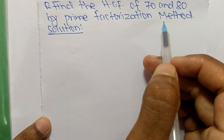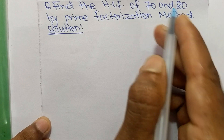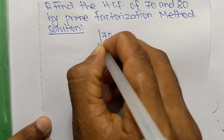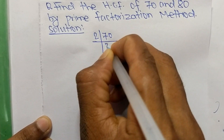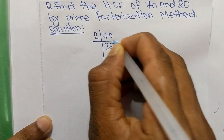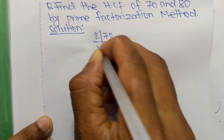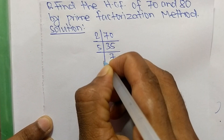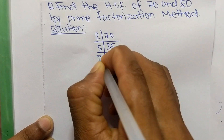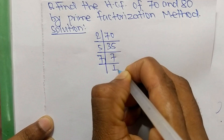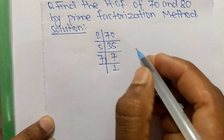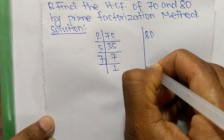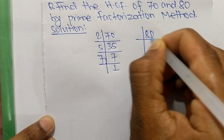First we find out the prime factors of 70. It is 2 times 35, which equals 70; 5 times 7, which equals 35; and 7 times 1, which equals 7.